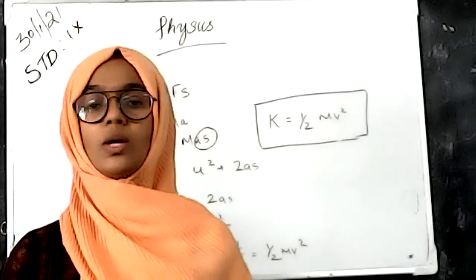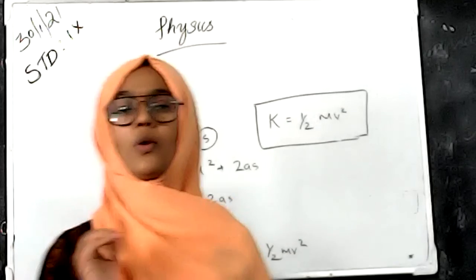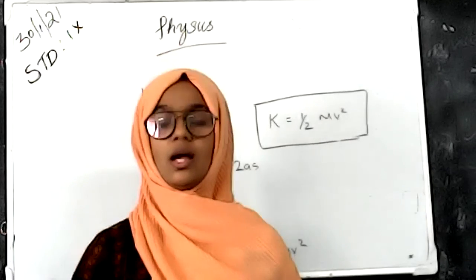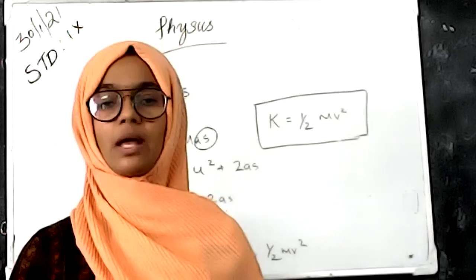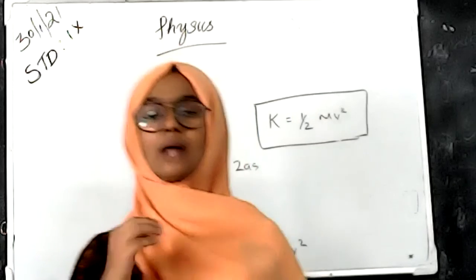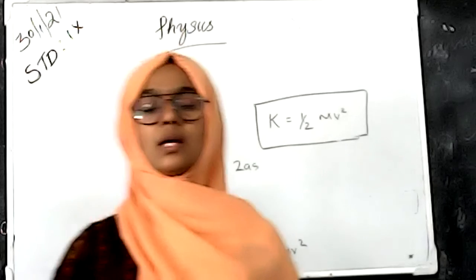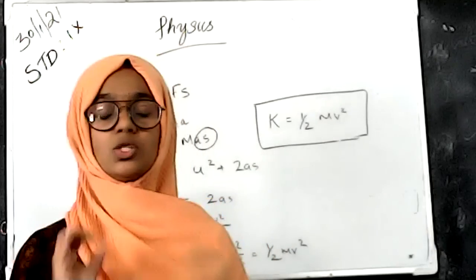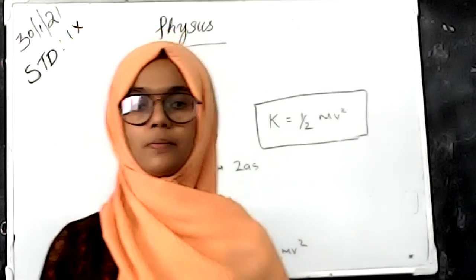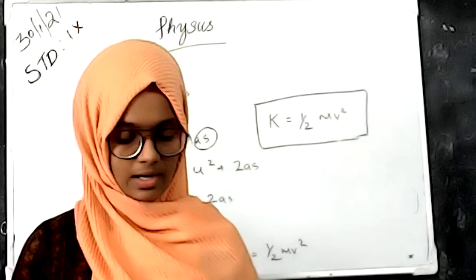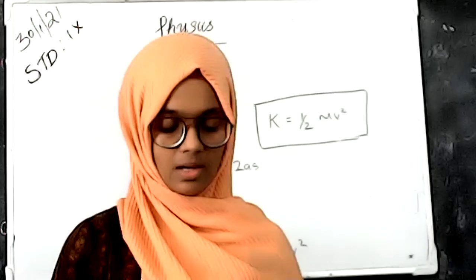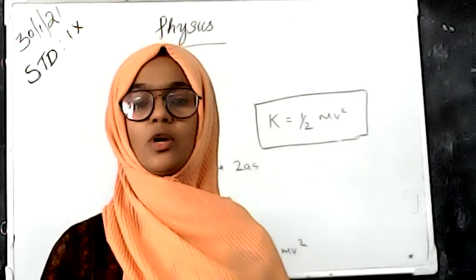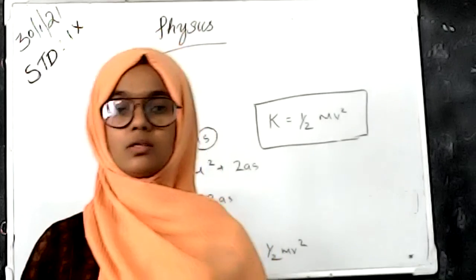One Joule is defined as: lifting a body of 100 grams to a height of 1 meter equals 1 Joule. Joule is the unit of work. In this class we discussed work and energy; we will discuss potential energy in the next class. Thank you.